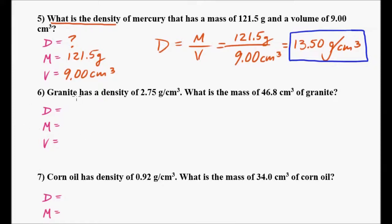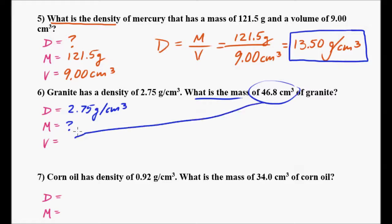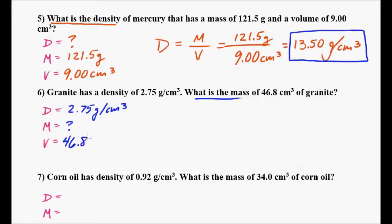Let's look at the next one. Granite has a density — the wording is a little different here. Granite has a density of 2.75 grams per cubic centimeter; what's the mass of 46.8 cubic centimeters of granite? I'm going to put density as 2.75 grams per cubic centimeter, a question mark for mass, and since 46.8 cubic centimeters is what's left, that must be my volume — and cubic centimeters is indeed a unit of volume, so that makes sense.